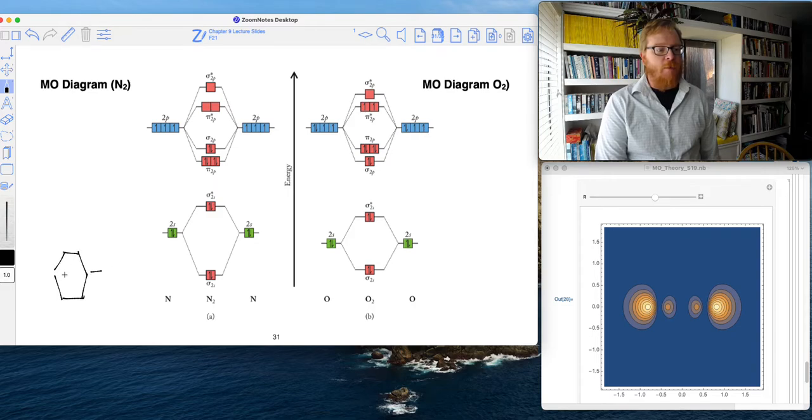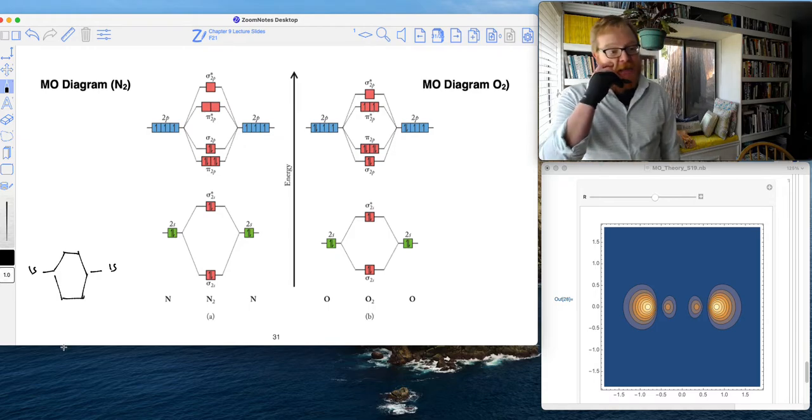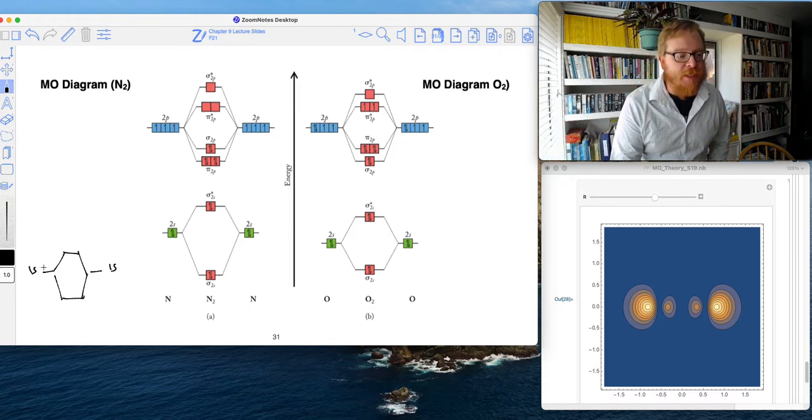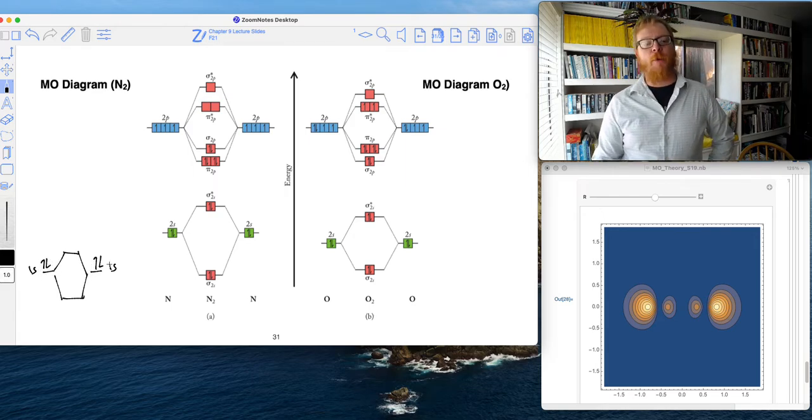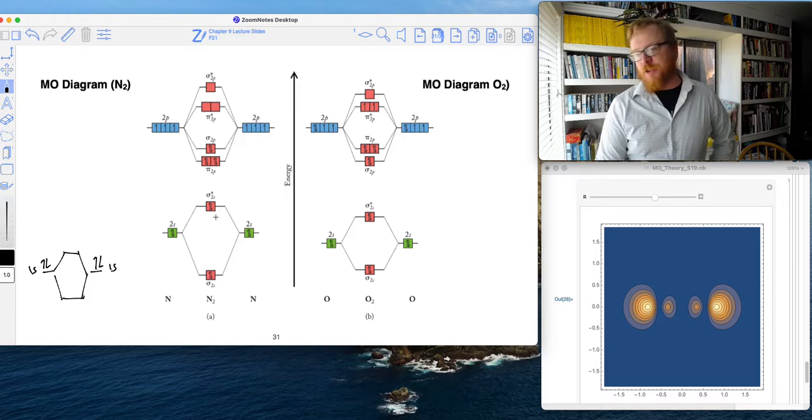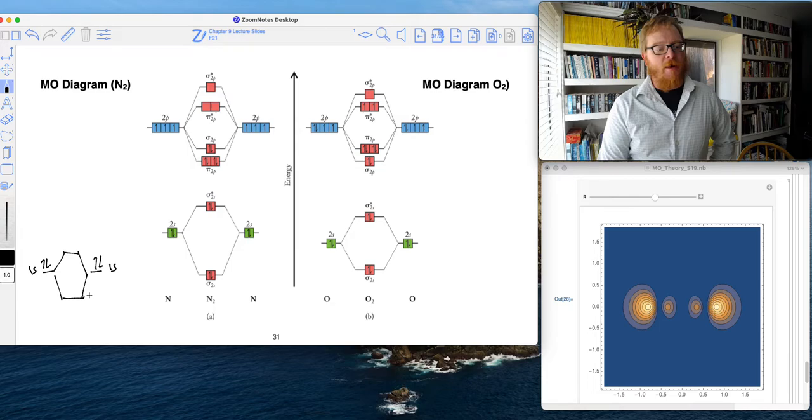I'm really terrible at these kind of drawings, right? So that would be 1S and 1S. We know each of our nitrogens has a full 1S. If we look at the periodic table, we can see that the 1S level for nitrogen is filled for electrons.